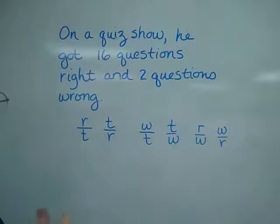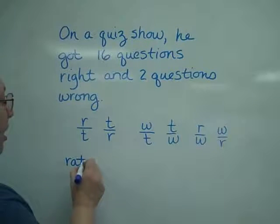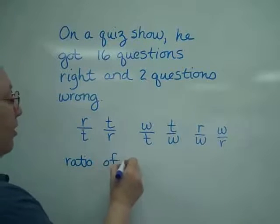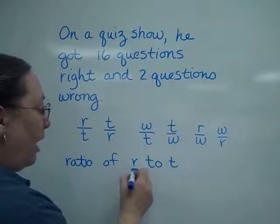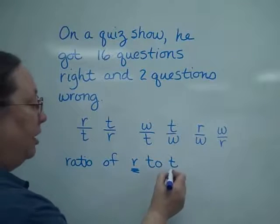What you have to do is read the question. If it says what is the ratio of the right to the total, the right becomes the top of the fraction.